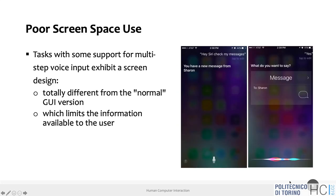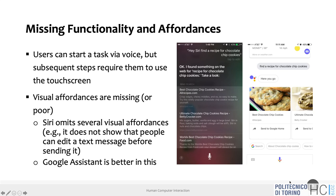Google Assistant is better in this regard. Looking at a Google Assistant screen for a recipe search, there are at least two visual affordances — buttons about chocolate chip cookies to get more information, and a 'send to Google Home' option so the recipe can be read by a voice assistant. They use screen space to provide additional cues.